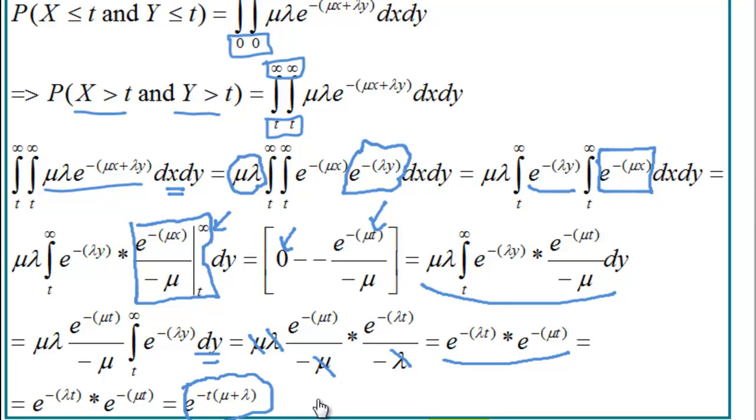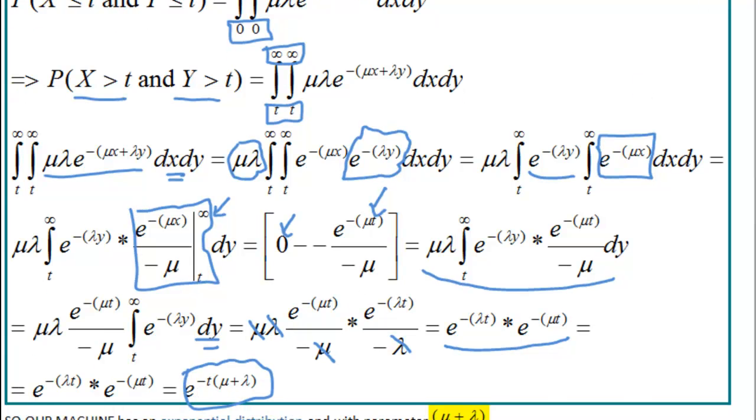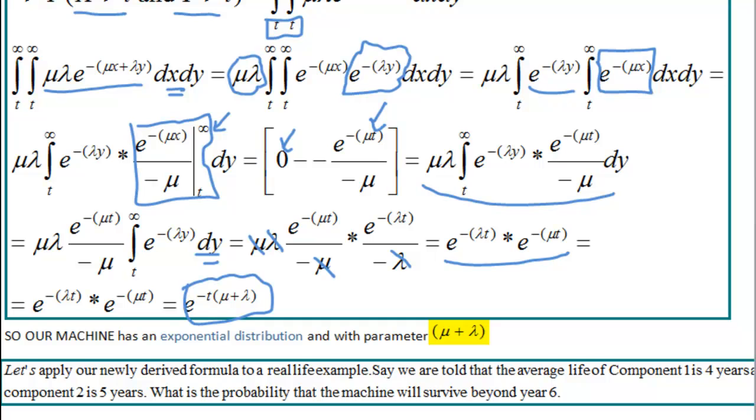So, that's a great result. I couldn't get more excited because, actually, our closed form solution for joint survival time of the two components is actually quite a memorable expression. It's a very easy formula to remember. It's just e to the minus t mu plus lambda. Therefore, to answer your question, our machine has an exponential distribution, as can be seen here with parameter mu plus lambda.